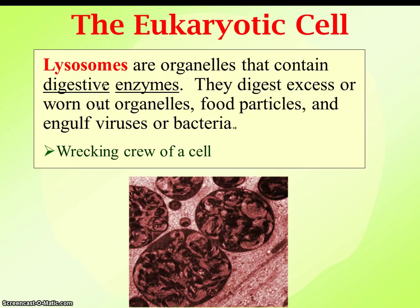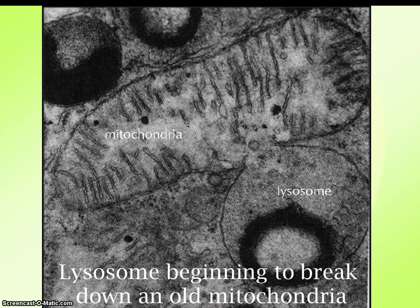In your eukaryotic cell, you have these things called lysosomes — kind of like the stomach. They have digestive enzymes that digest excess, worn-out, used-up organelles and leftover food particles that aren't needed anymore. If viruses or bacteria invade a cell, lysosomes eat all this stuff, digest it, and break it down to get it ready for removal from the cell. Here's a microscopic picture showing a lysosome actually starting to engulf and break down an old mitochondria that's no longer useful — breaking it down and getting it ready to ship that waste out of the cell.